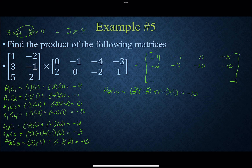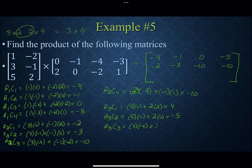Following now with the third row. Row 3, column 1: 5 times 0 plus 2 times 2 = 4. Row 3, column 2: 5 times −1 plus 2 times 0 = −5. Row 3, column 3: 5 times −4 plus 2 times −2 = −24. Row 3, column 4: 5 times −3 plus 2 times 1 = −13. So the third row is: 4, −5, −24, −13.